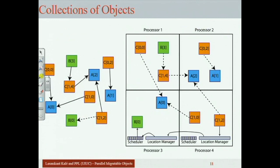There is a scheduler and a location manager. Objects have the name of their collection — A, B, or C — plus an index. When an object invokes a method on another object, the request goes to the location manager, which figures out which processor it probably lives on and sends the message there. The location manager keeps a cache of recent knowledge, confirms the target is still present, puts the method in the scheduler queue, and then executes it.